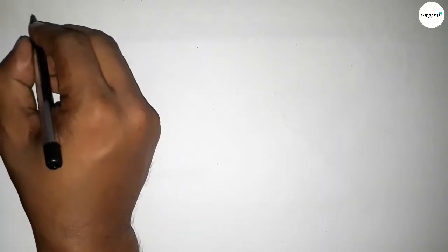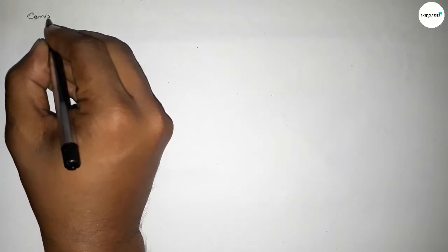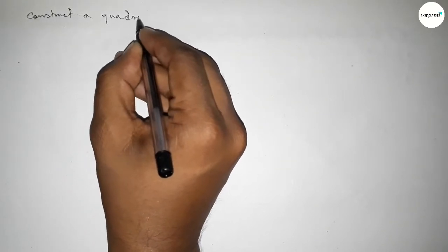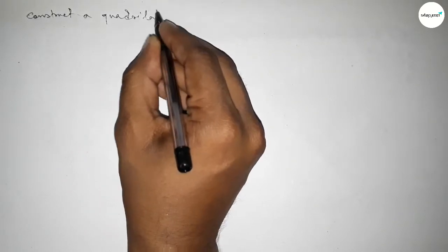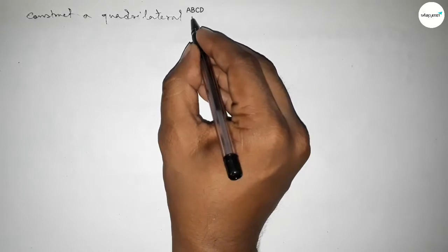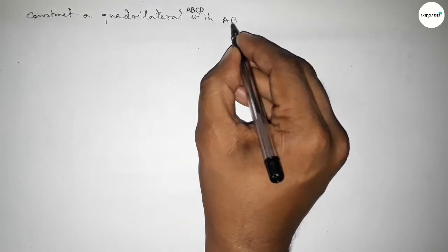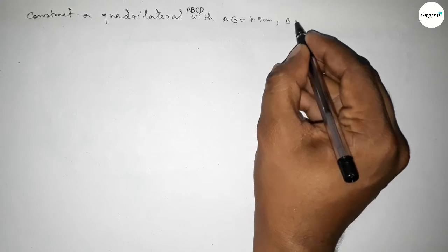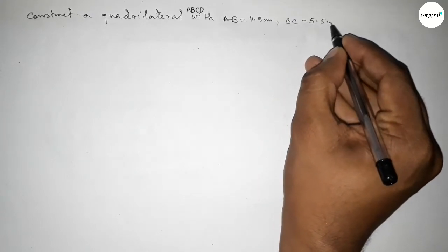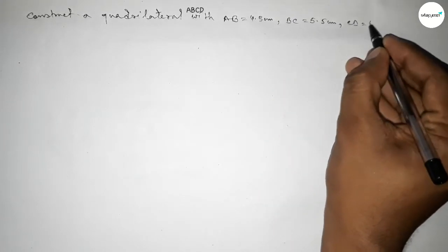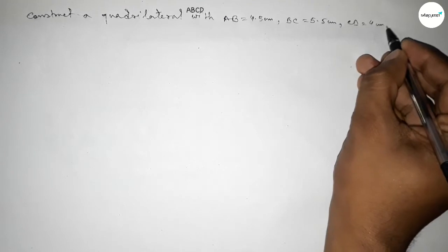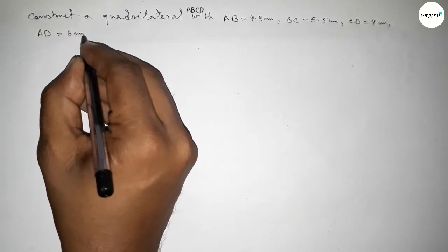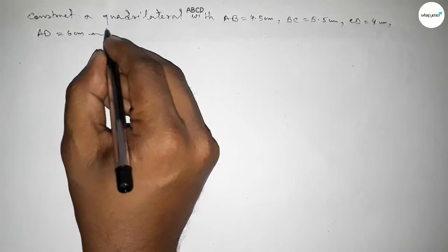Hi everyone, welcome to SI Share Classes. Today in this video we have to construct a quadrilateral ABCD with AB equal to 4.5 centimeter, BC equal to 5.5 centimeter, CD equal to 4 centimeter, AD equal to 6 centimeter.